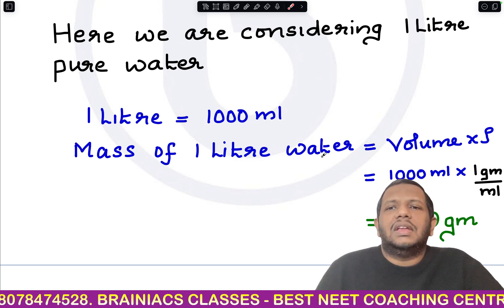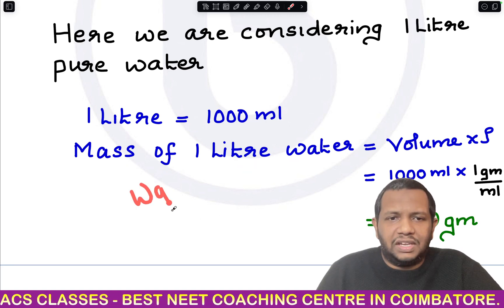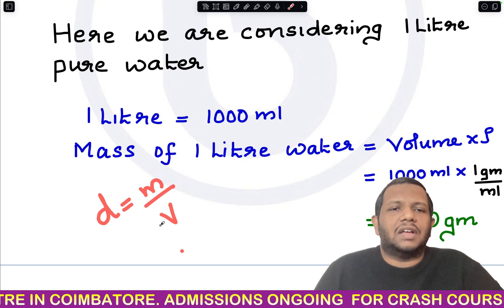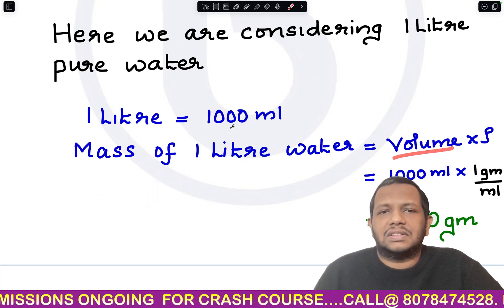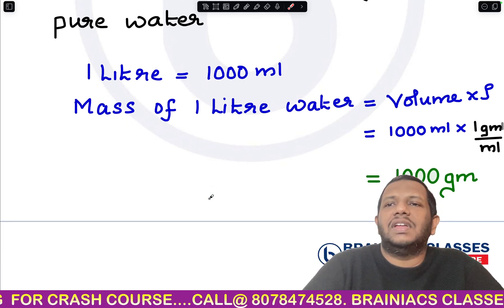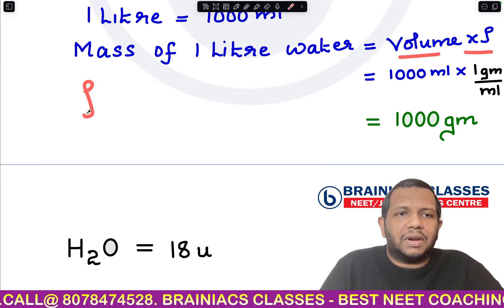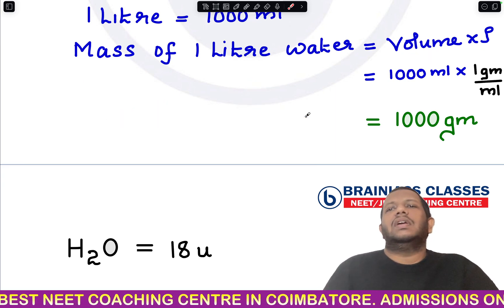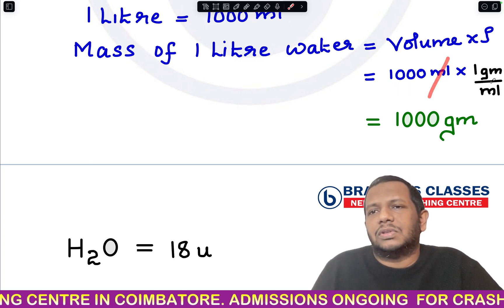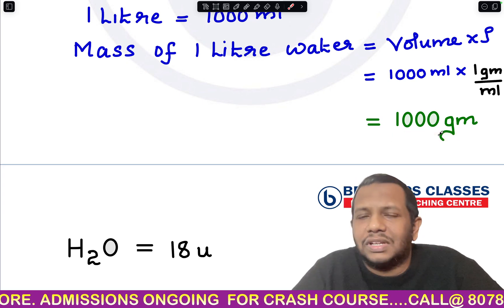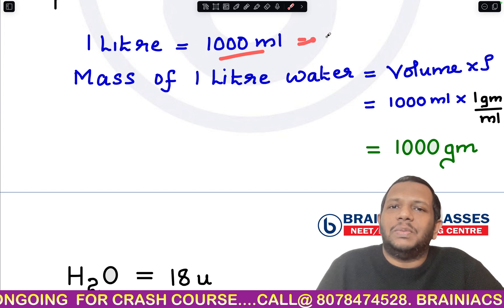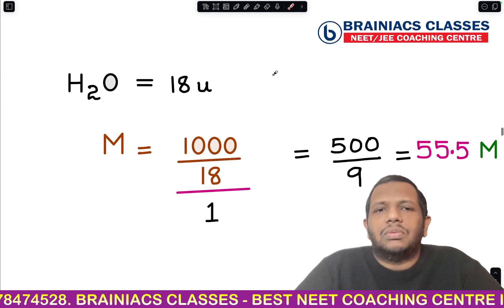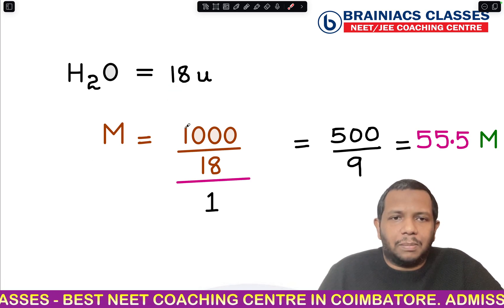One liter of pure water equals 1000 mL. To find the mass, we use: density = mass/volume, so mass = volume × density. The density of water is 1 g/mL — this is very important to remember. So mass = 1000 mL × 1 g/mL = 1000 grams. The molar mass of H₂O is 18 g/mol.